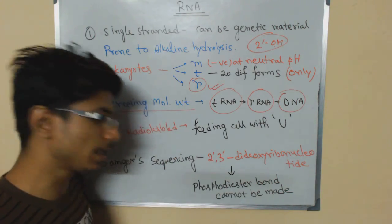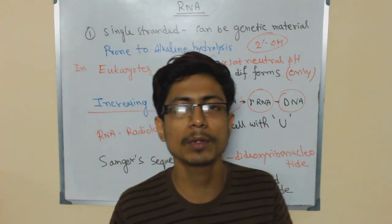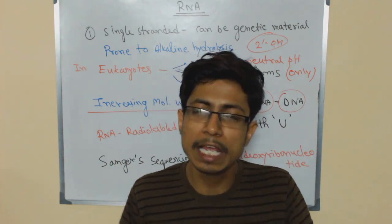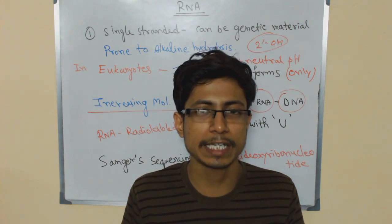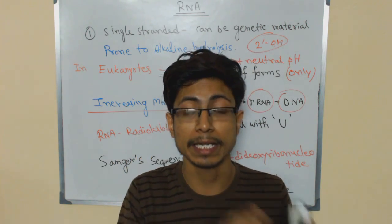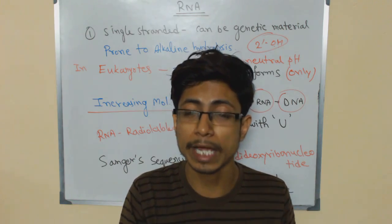If you look at the radio labeling process, in some cases we need to find out the presence of RNAs inside a cell, presence of DNA inside the cell. Easy way to find out the presence of RNA inside the cell is to add some radio labeling, radio labeled nucleotide.